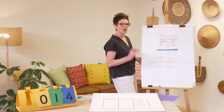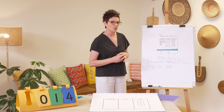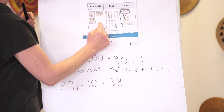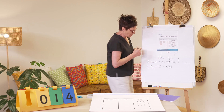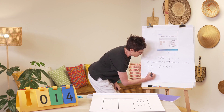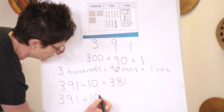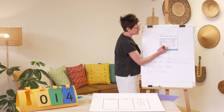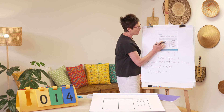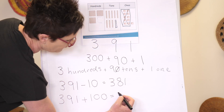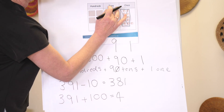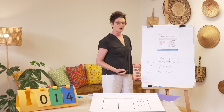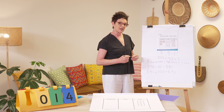Now let's add one hundred. I'm going to add a hundred in here. My number sentence is: three hundred and ninety-one add one hundred equals — so now I'm going to draw in an imaginary one hundred. One, two, three — I now have four hundred and ninety-one. Well done, great warm-up!